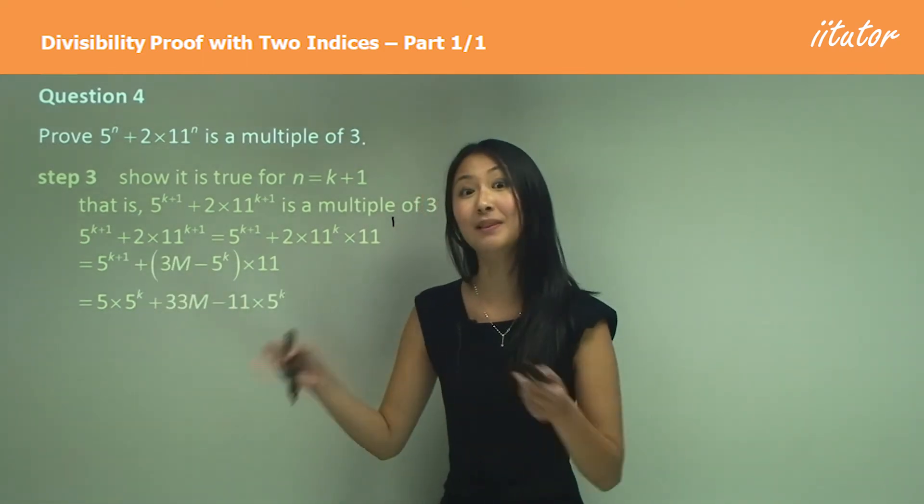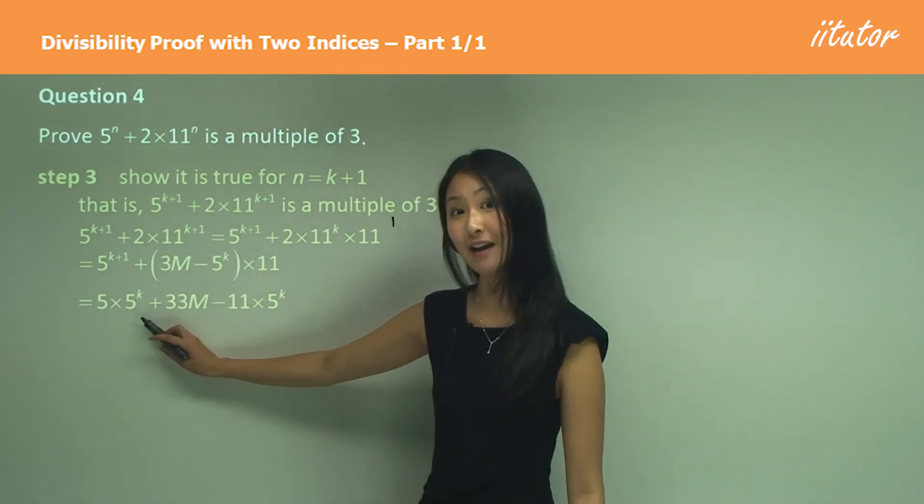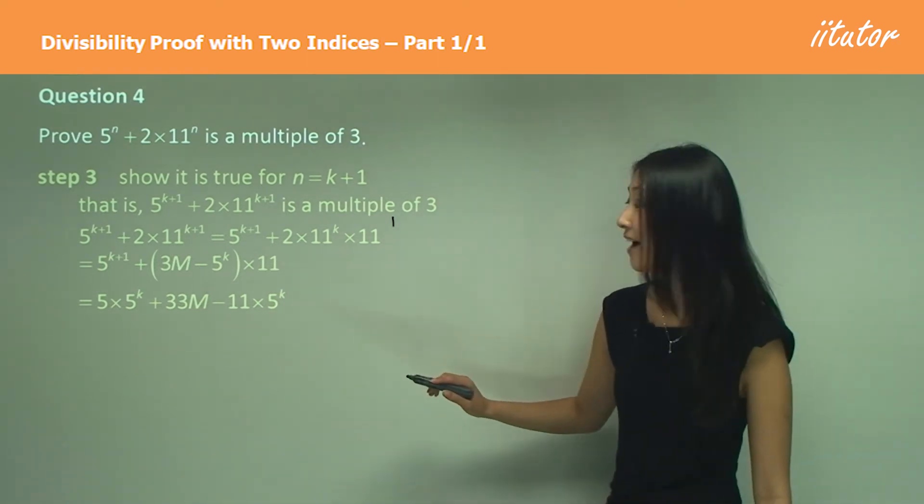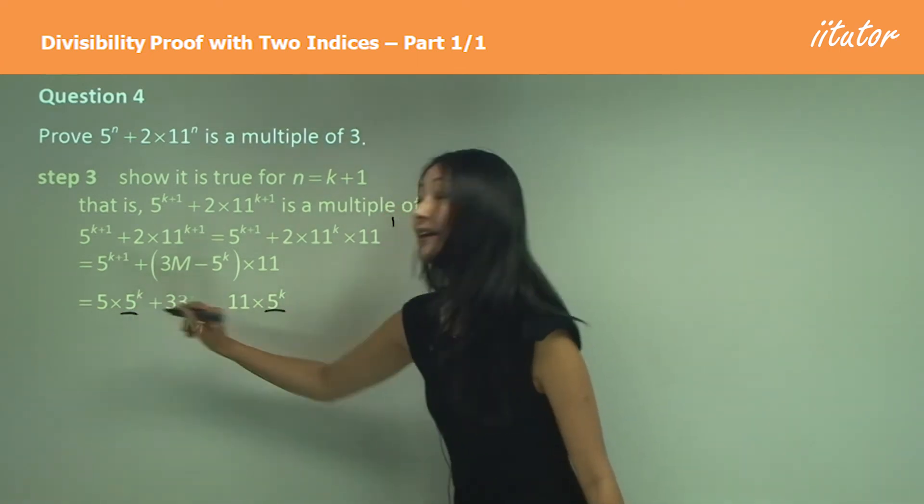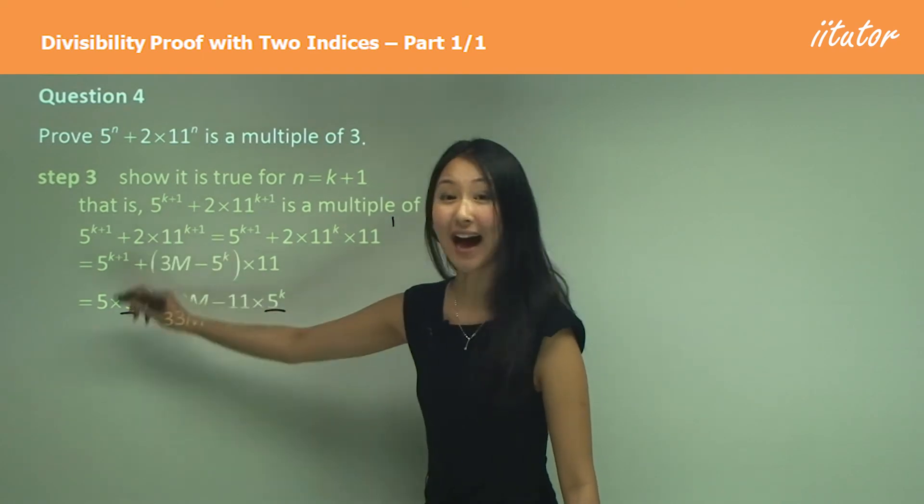So we know that we have to split that up into 5 to the power of 1 times 5 to the power of k. You can see now that this and this are common terms, which means that we can just add that together.